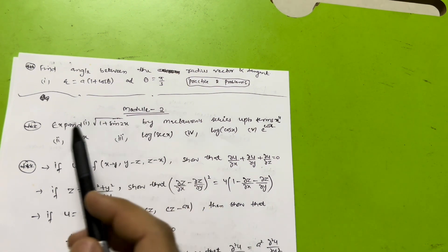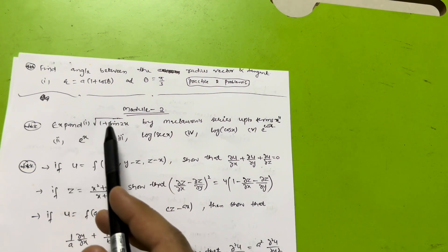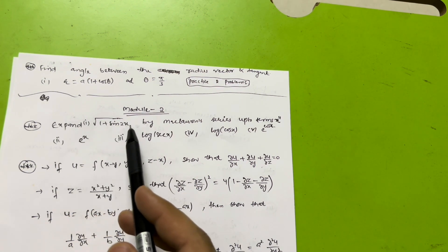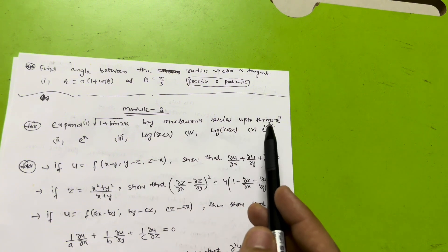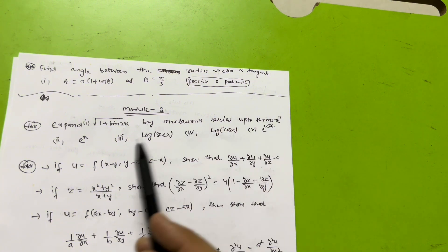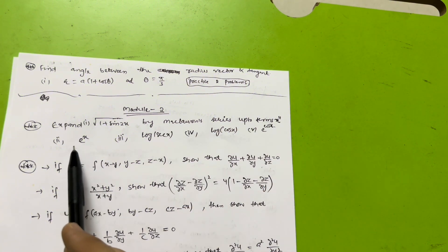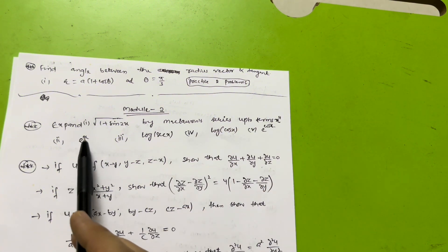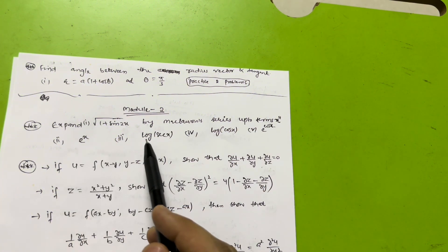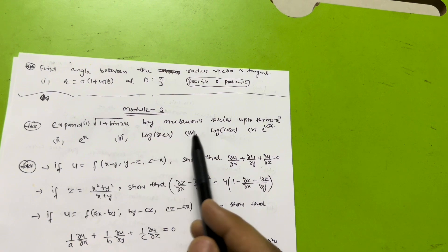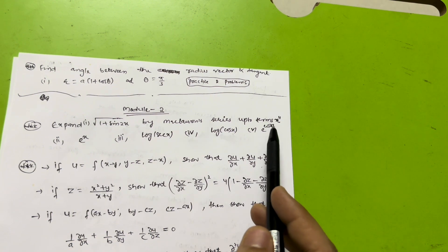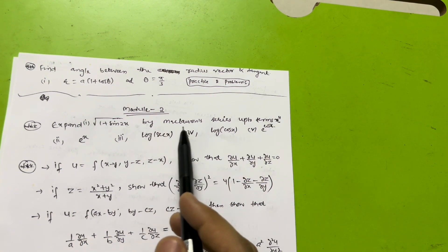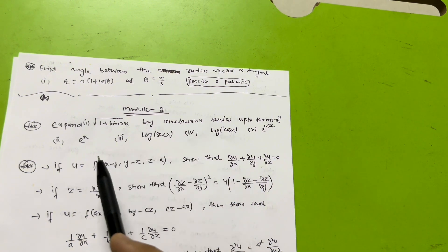Now Module 2: expand √(1 + sin 2x) by Maclaurin's series up to the term x⁴. Also expand e^x, log(sec x), log(cos x), and e^(cos x). These are the questions from Maclaurin's series.